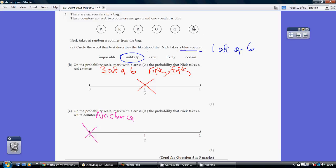Well, look, here's the only blue counter. It's 1 out of 6. So it's possible, it's not impossible, but it's not very likely. 1 out of 6 is quite unlikely. So the answer is unlikely. Part B.